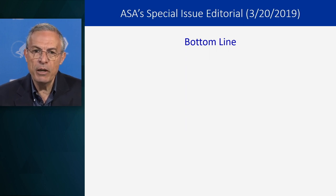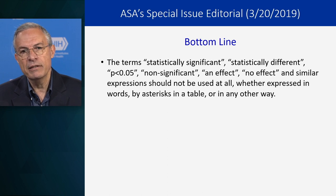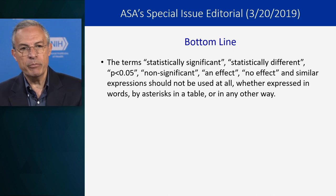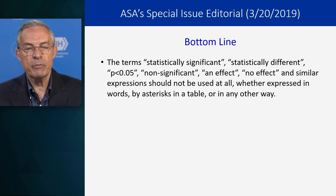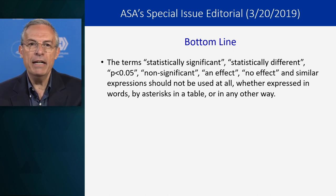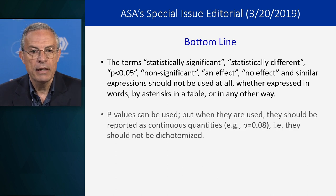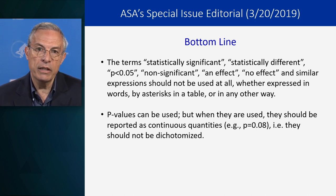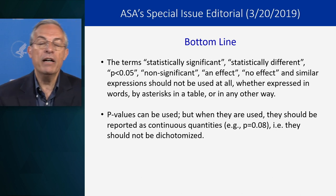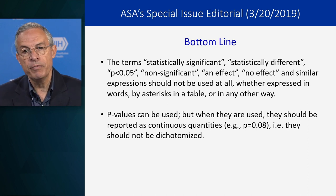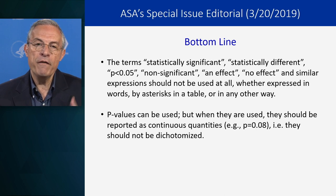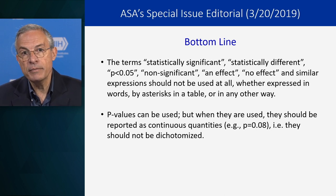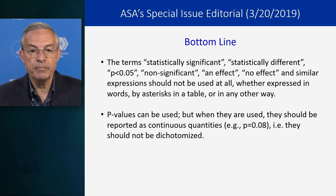What's the bottom line of this special issue? The term 'statistically significant,' 'statistically different,' 'p less than 0.05,' 'non-significant,' 'there is an effect,' 'there is no effect,' and any similar expressions should not be used at all — whether expressed in words, by asterisk in a table, or any other way. They are very categorical about it: just don't do it. P-values can be used — what I particularly like is that they're not saying let's completely ban p-values.